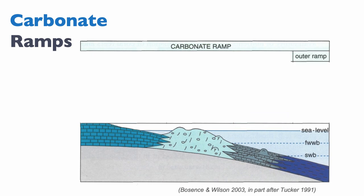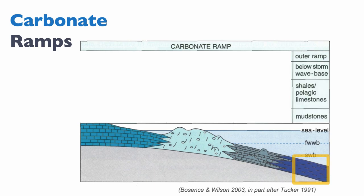We have the outer ramp, which is below the storm wave base. And because it's below the storm wave base, it's dominated by shales, pelagic limestone, and mudstone in terms of Dunham textures.